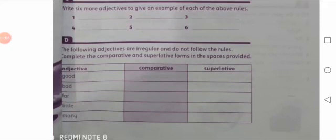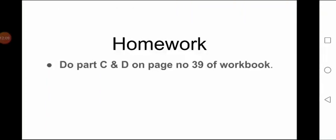Part D: the following adjectives are irregular and don't follow the rules. Complete the comparative and superlative forms in the spaces provided. Like irregular verbs, they don't follow ER and EST in comparative and superlative degrees — they have different words for their degrees. For example: good / better / best. Next, you have to find the comparative and superlative for: bad, far, little, many. These are adjectives and you have to find their comparative and superlative degrees. This is the end of the page and I think you can do very well.